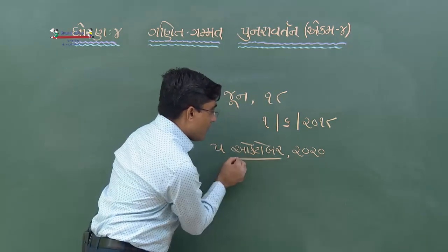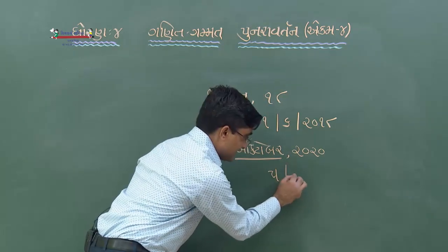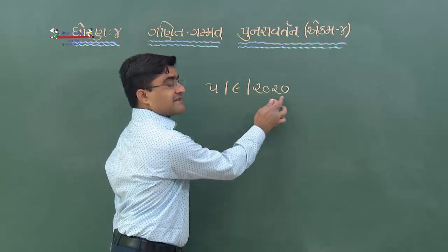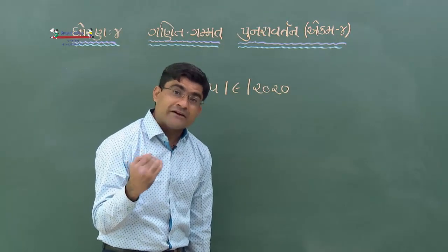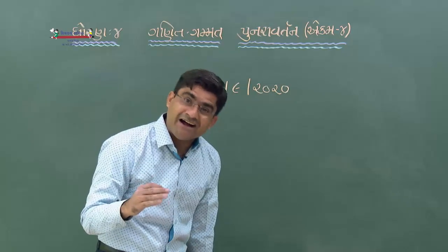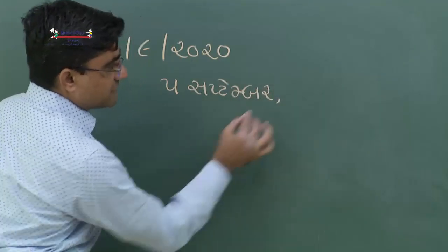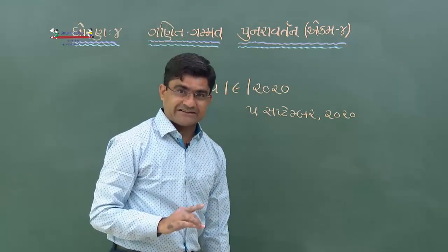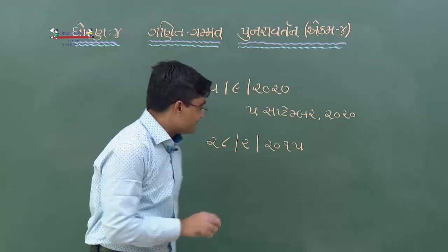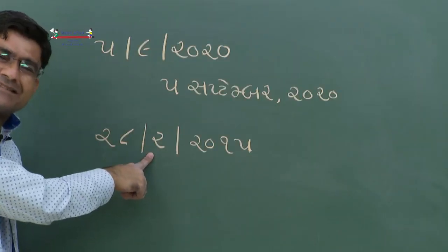ઓક્ટોબર 10મો મહિનો, જો આપણે જ્યારે મહિનાનું નામ લખ્યું હોઈએ, 5 October 2020, ત્યારે 5-10-2020. બીજી તારીખ: 28/2/2015 - 28 ફેબ્રુઆરી 2015 - 2જો મહિનો - સાબાશ! 28 February 2015.